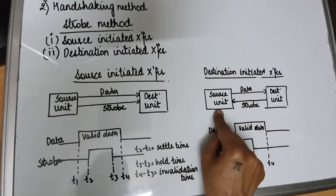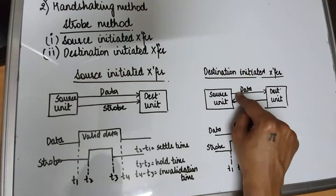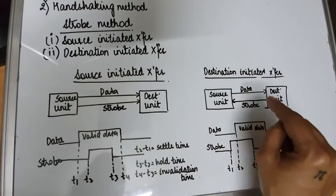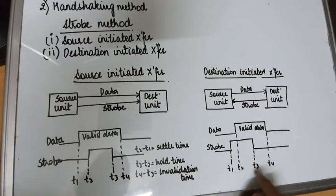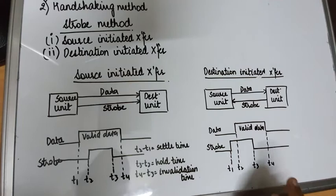At time t2, the source unit puts data on the data bus, since the destination unit is asking for the data and is ready for it. From t2 to t3, that interval is the hold time or acceptance time — this is the time during which the data will be read from the data bus by the destination unit.